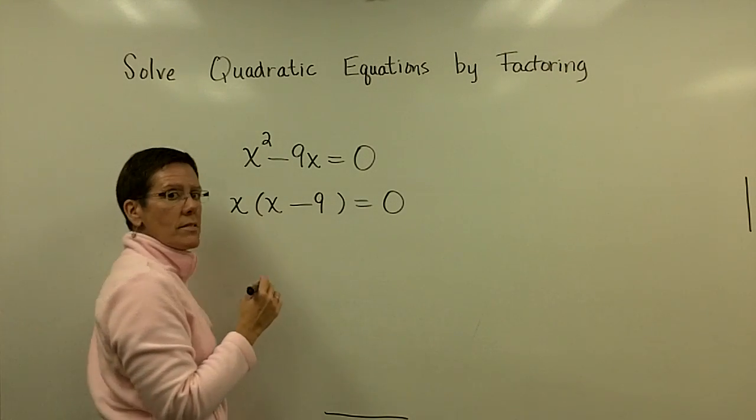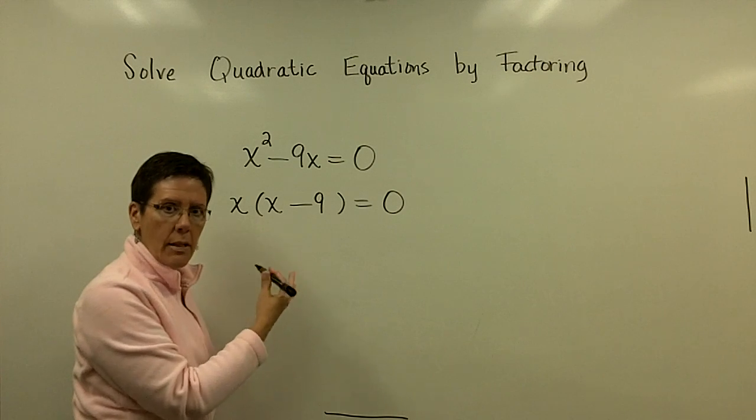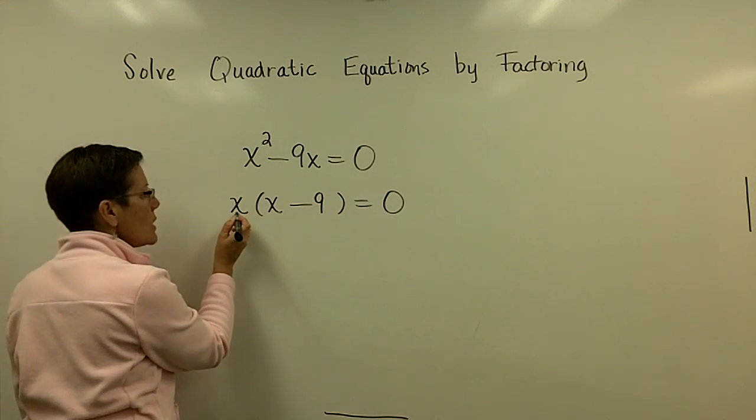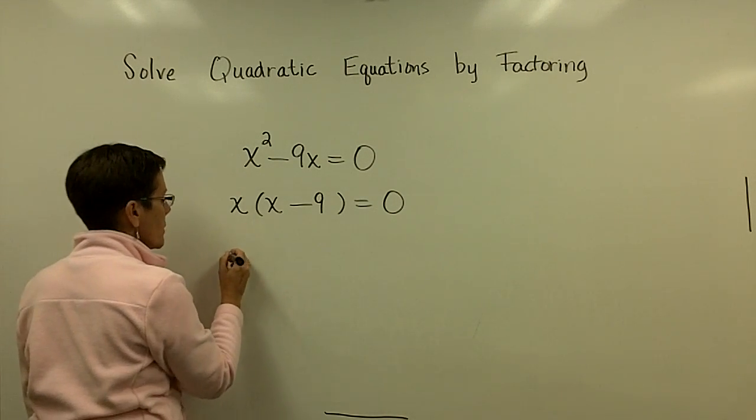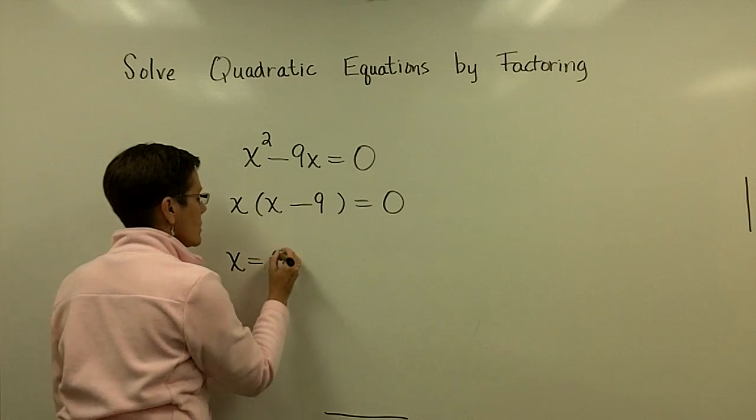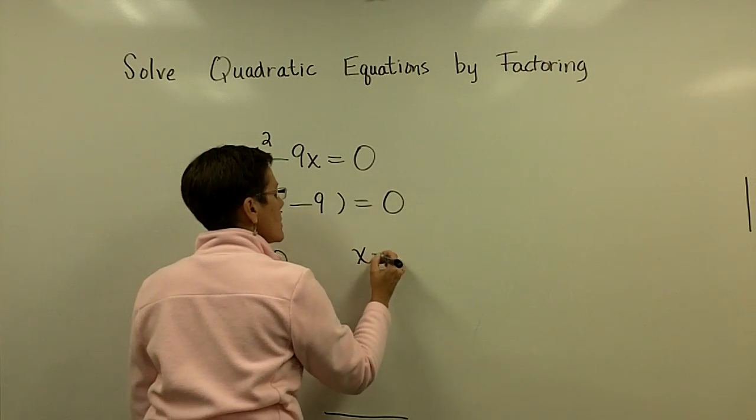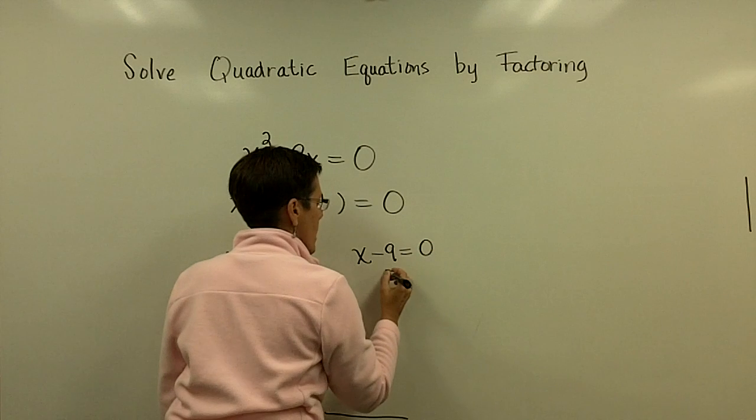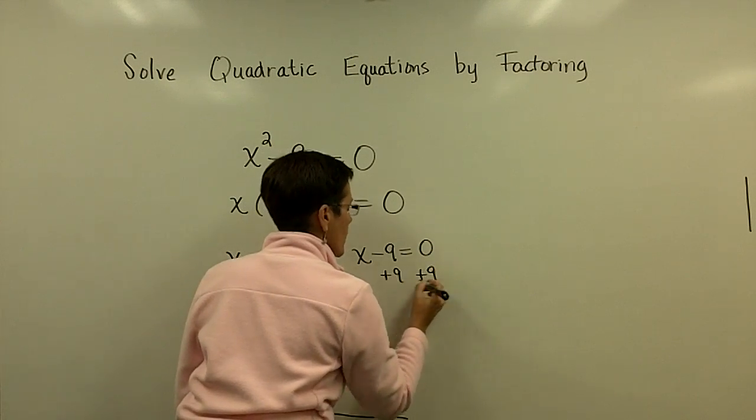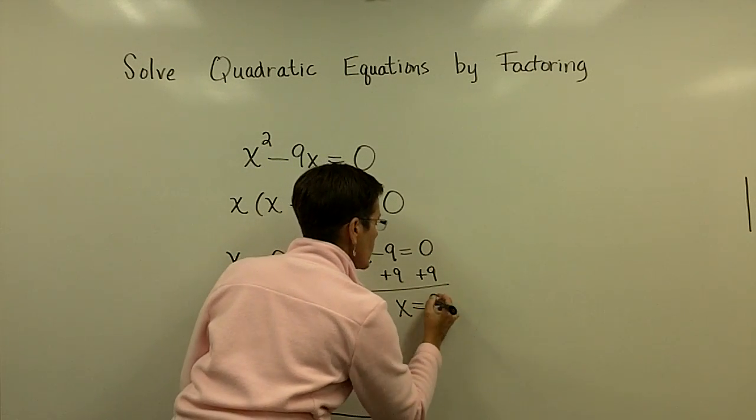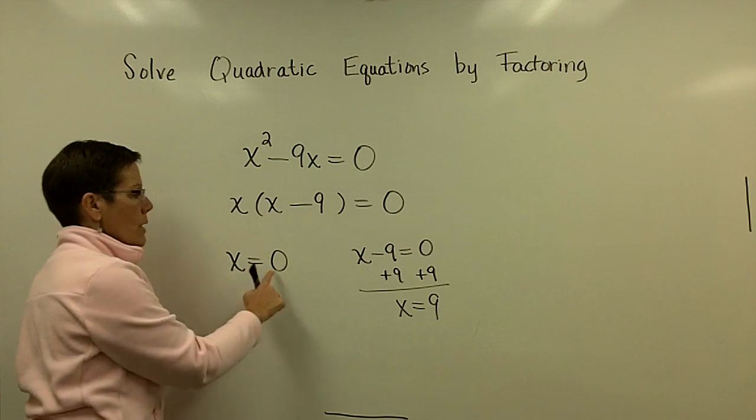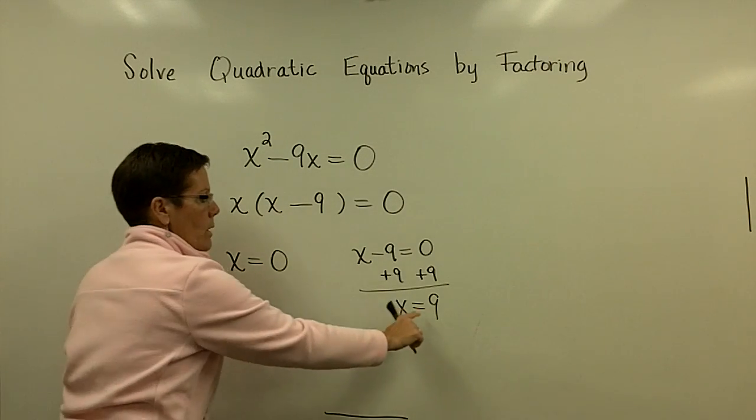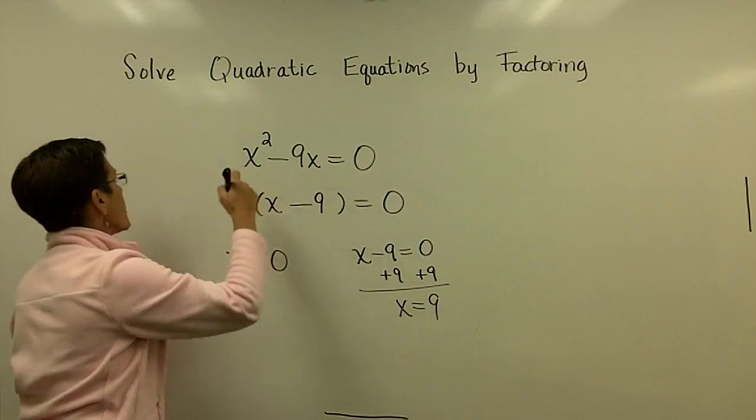The 0 product rule says to set any of the factors on the left side equal to 0. So this contains the variable, so I'm going to set x equal to 0. And then I'm also going to set the x minus 9 equal to 0. And then I'm going to add 9 to both sides and find out that the two solutions for this problem: one of them is 0 and one of them is 9.